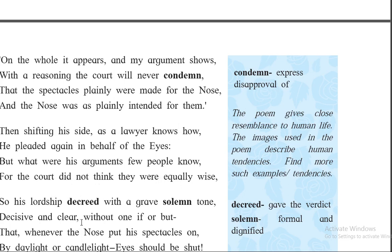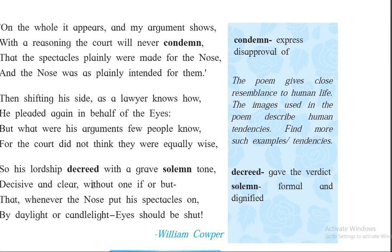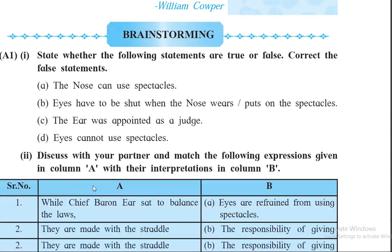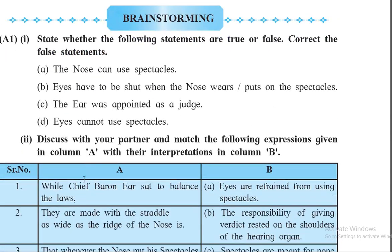I think I have told you all the figures of speech. You can still go through the entire poem to see if you can find more. Now we will start with the brainstorming questions of the poem. State whether the following statements are true or false and correct the false statements. 'The nose can use spectacles' — according to you, can the nose use spectacles? You can say false. The nose cannot use spectacles.